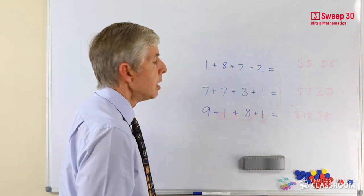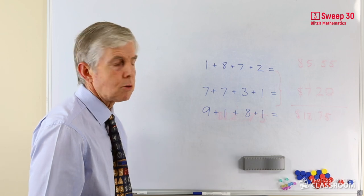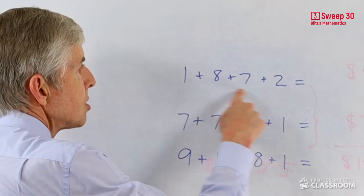We have 1, 8, 7 and 2. How can we make 10 out of two of those numbers? Well, 8 plus 2 is 10.